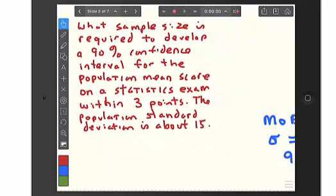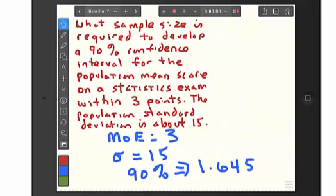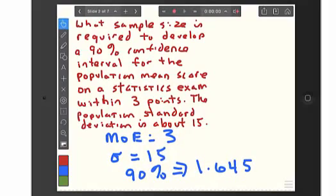So step one would be to pull the information out of the problem. We have a margin of error equal to three. Population standard deviation equal to 15. And we want a 90% confidence interval for the population mean.